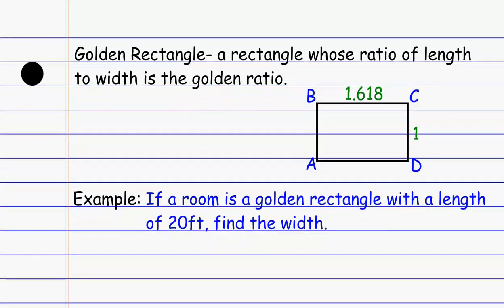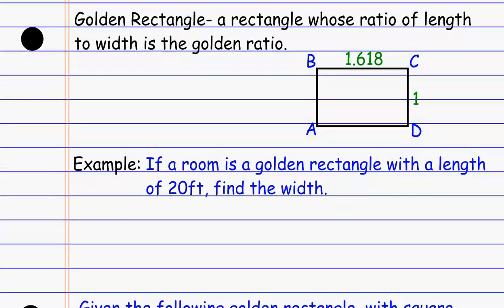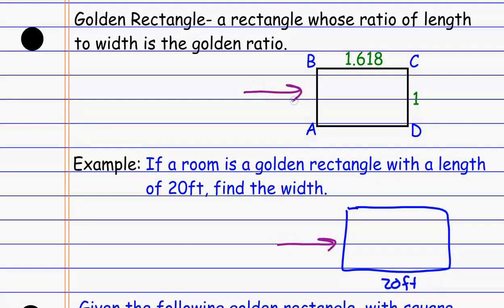When we look at something like this — if a room is a golden rectangle with a length of 20 feet, we want to find the width. I'll draw a picture: the length is 20 feet, and I want to find the width using the golden ratio. Every golden rectangle will be similar because their angles all match up and their sides are all proportional — they all use the golden ratio. So the rectangle I've drawn is similar to the standard golden ratio rectangle.